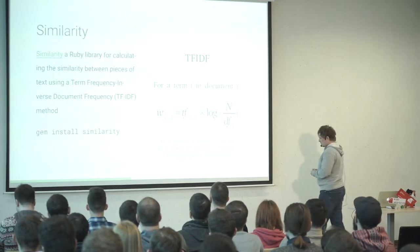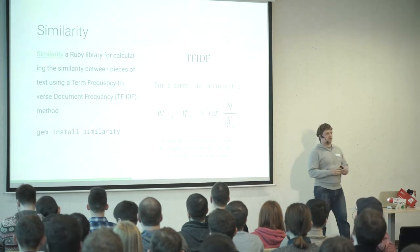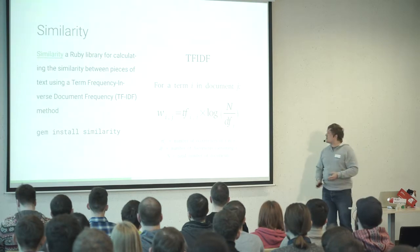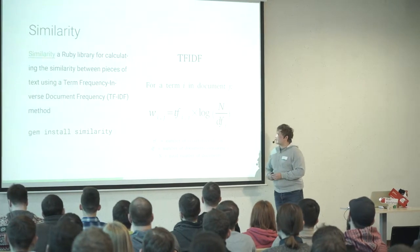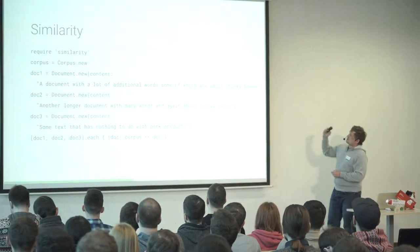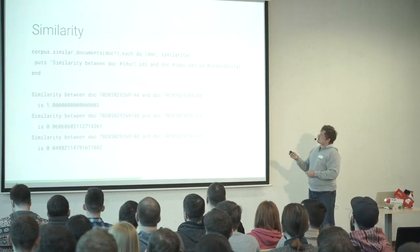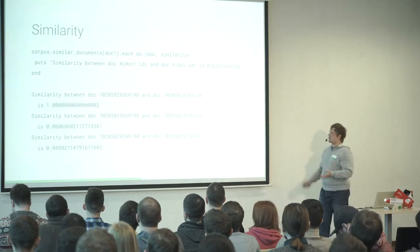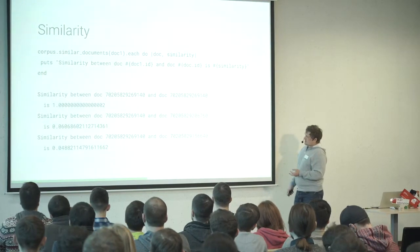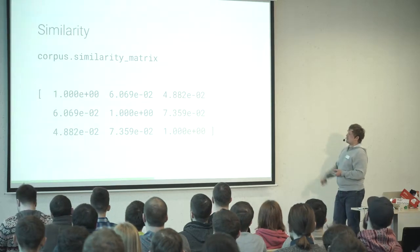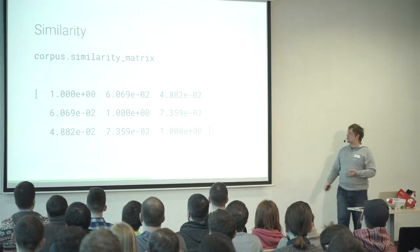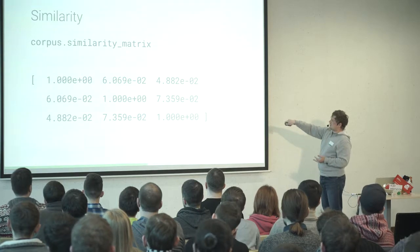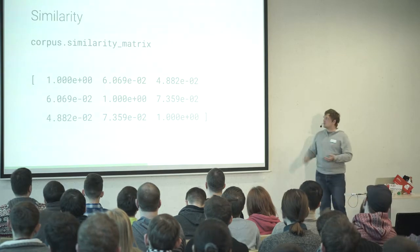Similarity: for example, you need to work with documents and understand how similar they are. You provide the algorithm with 'these documents are about food,' 'these documents are about animals,' then ask 'what can you say about this document?' And it provides 'I think it's about animals.' You can use TF-IDF — term frequency inverse document frequency. A library exists for this: create some documents, fill them, and compute similarities. If you compare the same document, it provides similarity of 1 (100%). You can also create a similarity matrix for three documents — the diagonal is all 1s because you're comparing the same document, and comparing A to B gives the same result as B to A.